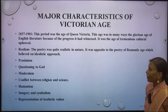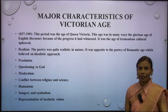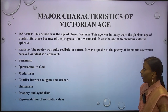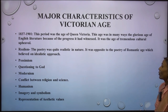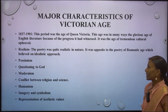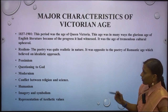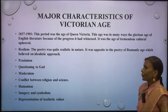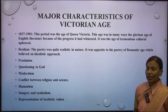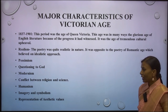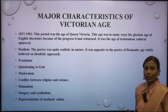Let us come to the major characteristics of the Victorian Age. The time period of the Victorian Age is 1837 to 1901 — the age of Queen Victoria. This was in many ways a glorious age of English literature because of the progress it witnessed. It was the age of tremendous cultural upheaval. Major characteristics include realism, pessimism, questioning of God, modernism, conflict between religion and science, humanism, imagery and symbolism, and representation of aesthetic values.